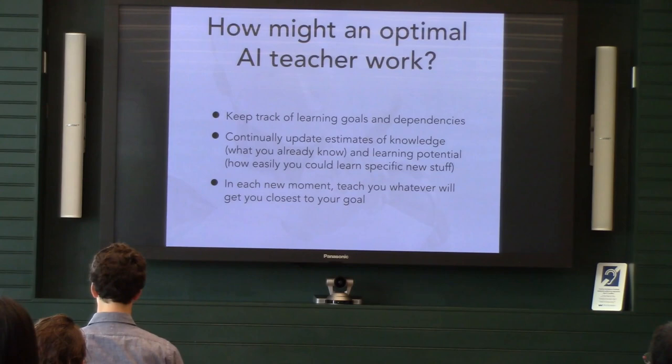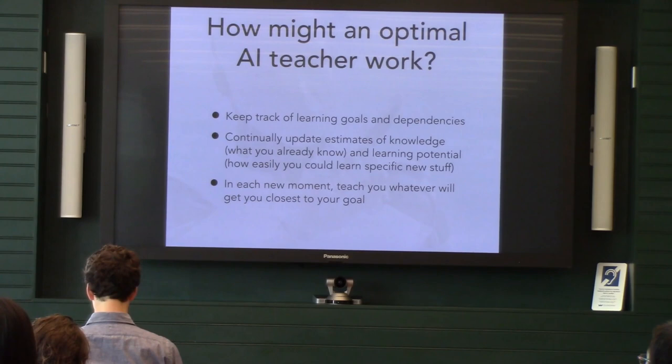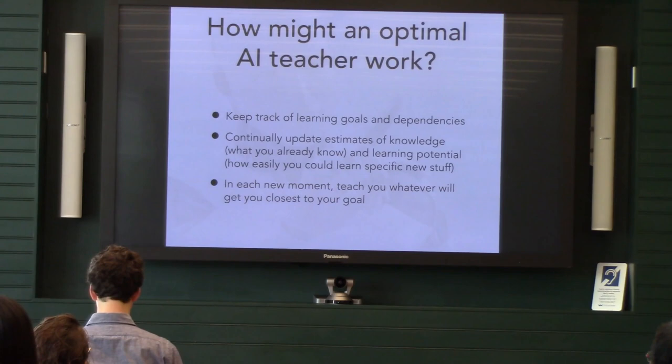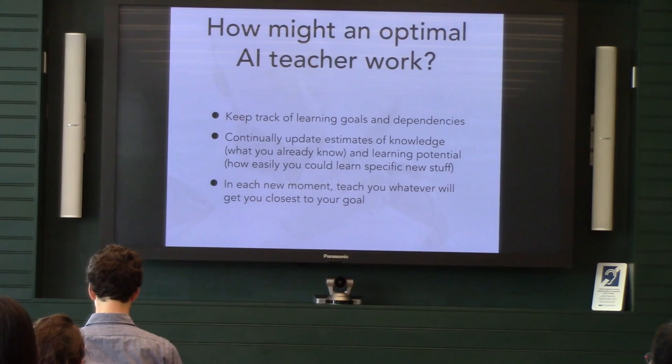So how could this work? Well, I think we essentially need to do three things. We need to keep track of what your learning goal is. And there's a really interesting and difficult to solve dependency problem in learning, where you can't just learn about any arbitrary thing at any given moment. Often, learning a new concept requires already knowing other stuff on which that concept is built. So that problem needs to be solved in order to solve learning in the general case. Second, we need a model of what you know. Otherwise, we can't make use of those dependencies. And we also need to know how well you can learn about arbitrary things, also perhaps using those dependencies.